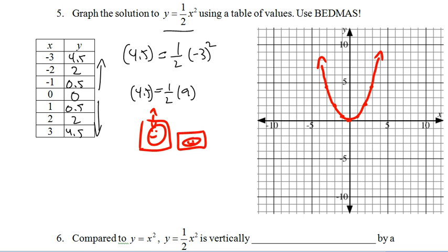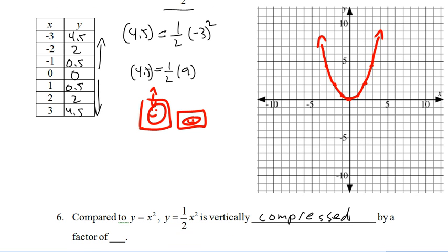So compared to y equals x squared, y equals 1 half x squared is vertically compressed. It's been squashed vertically by a factor of 1 half. And same thing. On my original graph I went over 1 up 1. On this one, I go over 1 up 1 half. Original graph was over 2 up 4. This time we go over 2 up 2. So it goes half as far away from the x-axis.